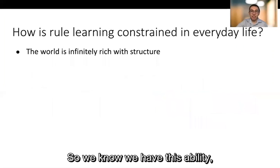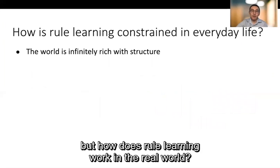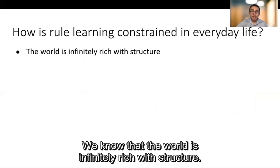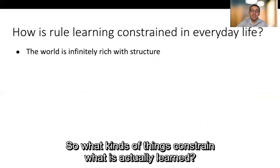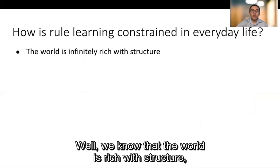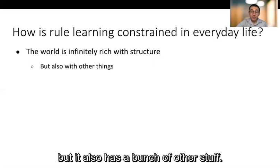So we know we have this ability but how does rule learning work in the real world? We know that the world is infinitely rich with structure in fact it probably has more structure than we're able to be aware of at any given time. So what kinds of things constrain what is actually learned? Well we know that the world is rich with structure but it also has a bunch of other stuff.